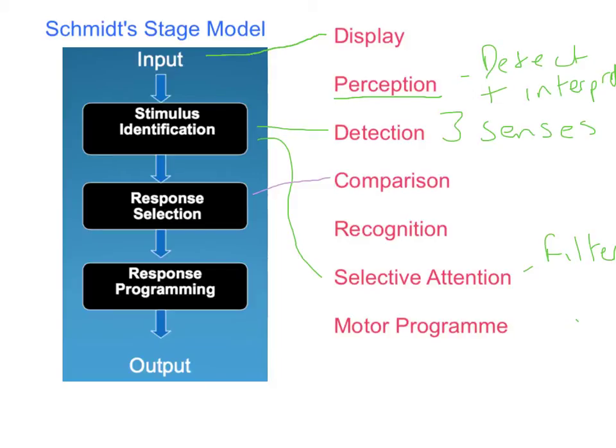In our long-term memory, we have a lot of information stored as motor programs. If we've got a similar experience to the one we're in, we find that information, which is known as recognition. We're linking this stimulus with a previously learned one. We then select that motor program and we've selected a response.